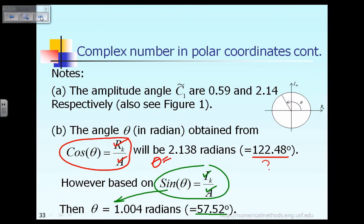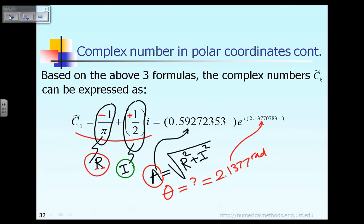So the problem is: how do you know which answer is correct? If you use the first formula, the answer for theta is 2.138 radians, which is 122 degrees. When you use the second formula, the answer is 1.004 radians, which is 57.52 degrees. In order to see which one is right, you have to remember: the real part of C̃1 is supposed to be negative, and the imaginary part of C̃1 is supposed to be positive.